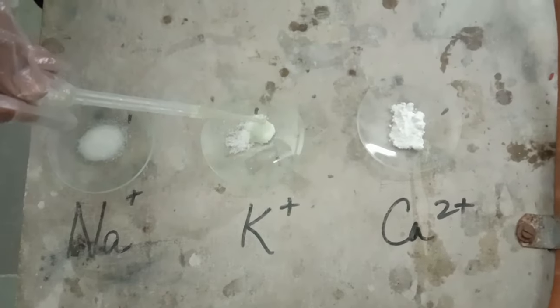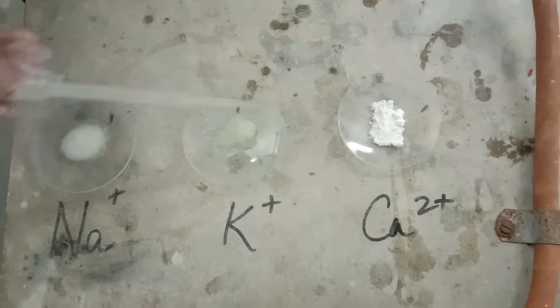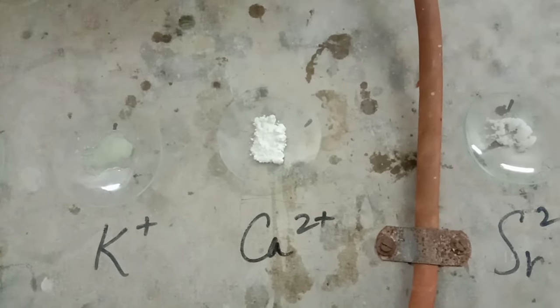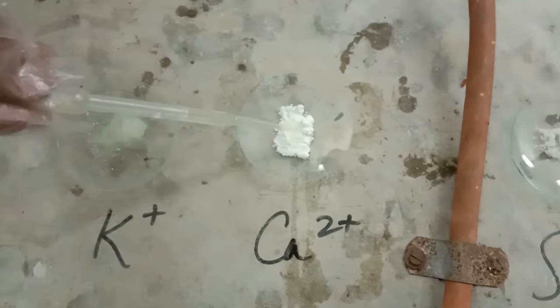With the help of dropper, add about 0.5 ml of concentrated hydrochloric acid to each sample to make slurry which is a semi-solid paste.